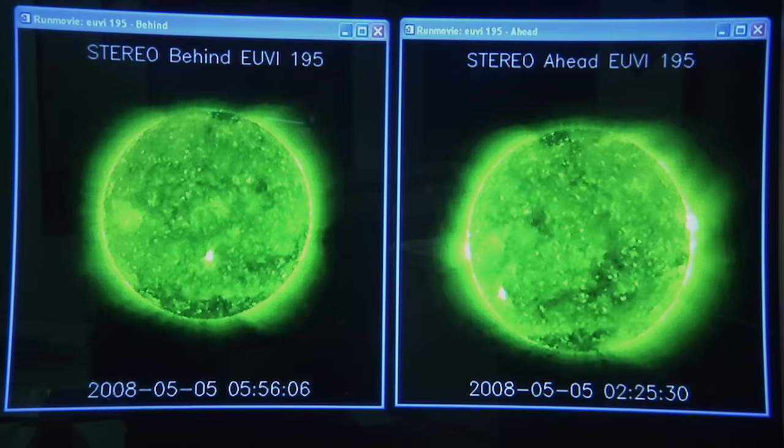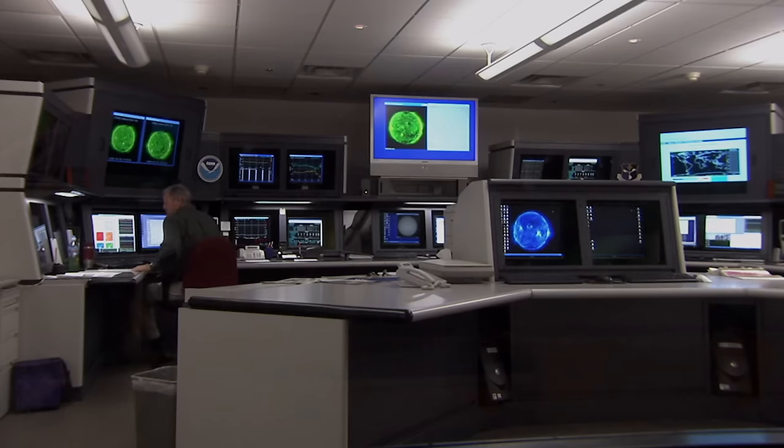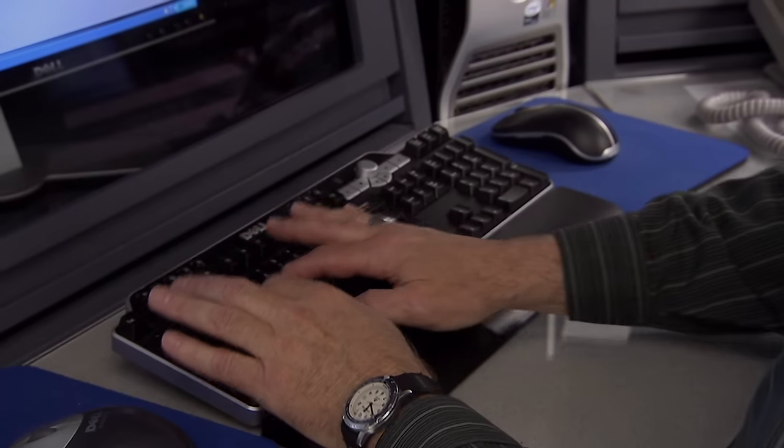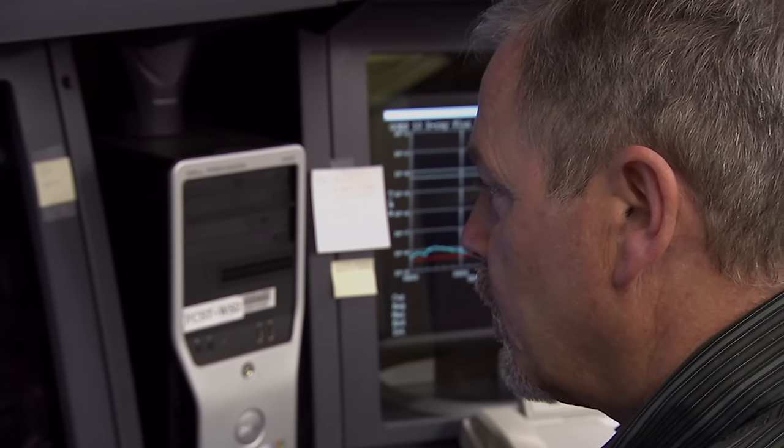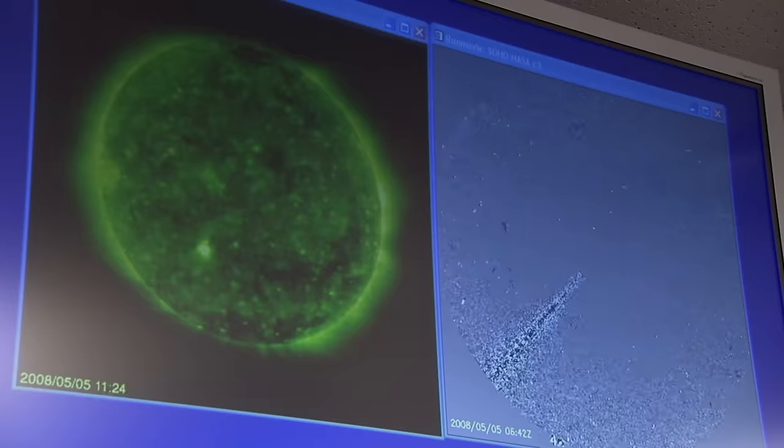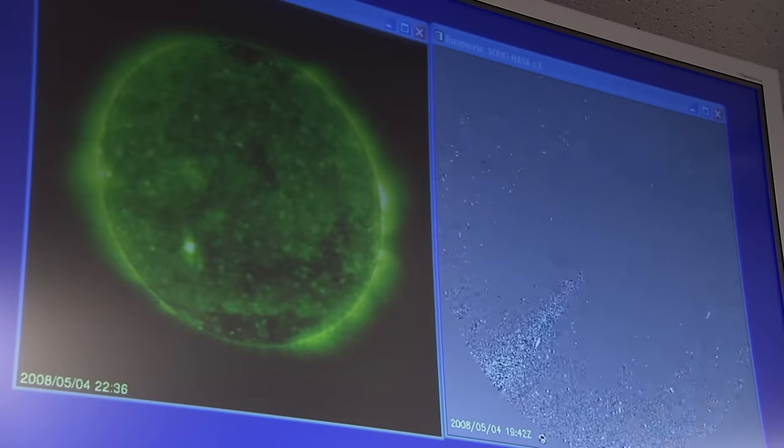At the Space Weather Prediction Center, scientists keep a watchful eye on the sun. They're looking for any increase in activity, including the buildup of sunspots. The forecaster today is looking at the data, trying to understand what the sun is doing right now, and then making predictions of the effects on Earth.